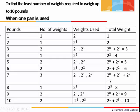Looking at the table: for 1 pound, only one weight is needed — 2 to the power 0, which equals 1. For 2 pounds, one weight: 2 to the power 1, which equals 2. For 3 pounds, two weights: 2 to the power 0 and 2 to the power 1, adding up to 3. For 4 pounds, one weight: 2 to the power 2, which equals 4. For 5 pounds, two weights: 2 to the power 0 and 2 to the power 2, adding to 5. For 6, two weights: 2 to the power 1 and 2 to the power 2, giving 6. For 7, three weights: 2 to the power 0, 2 to the power 1, and 2 to the power 2, giving 7.